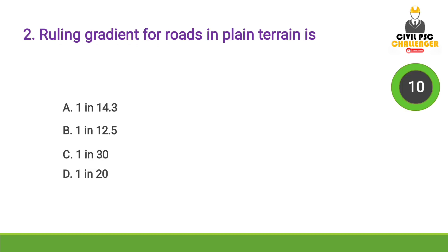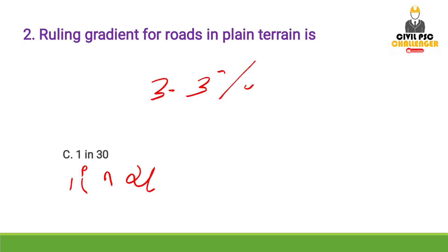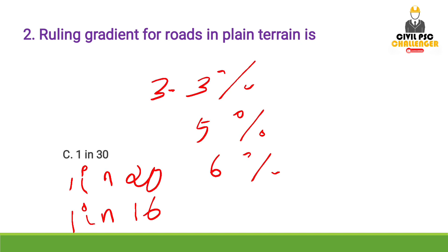Next question: Rolling gradient for roads in plain terrain is — Answer: Option C, 1 in 30. Rolling gradient for roads in plain terrain is 1 in 30, which equals 3.3%. For mountain areas, the rolling gradient is 1 in 20, which is 5%. For steep areas, it is 1 in 16.